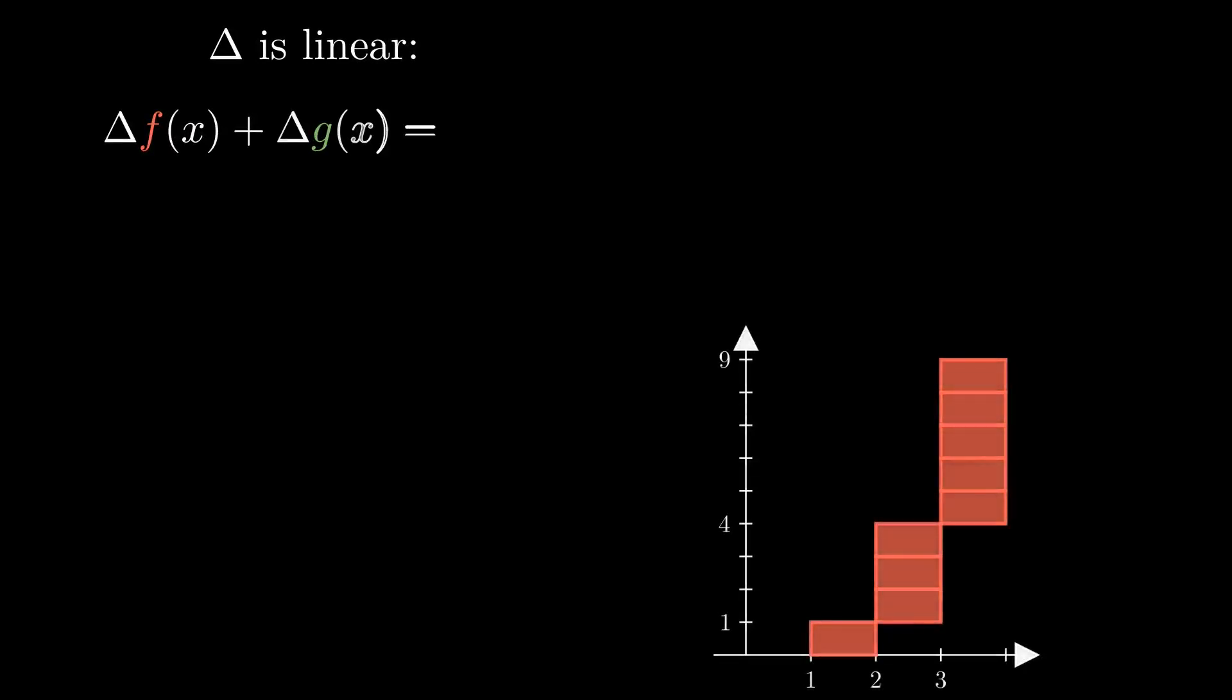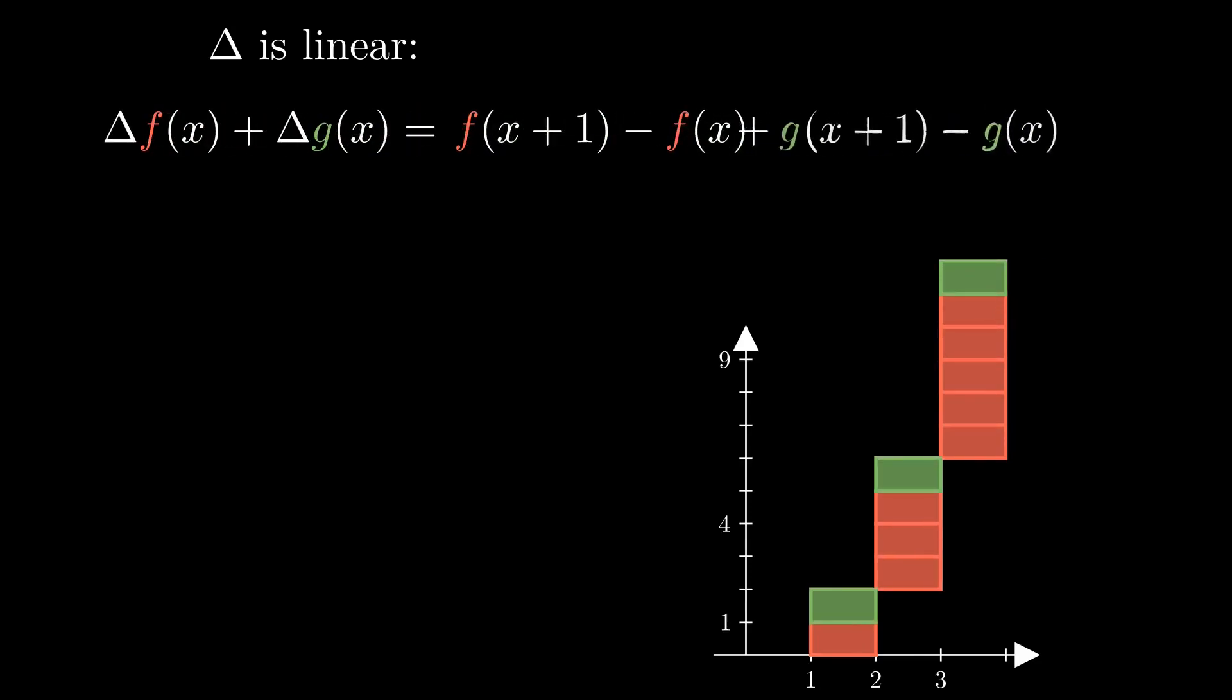An important property of delta is that it's linear. That is, it's additive: the sum of the deltas of two functions is the same as the delta of the sum of those functions.